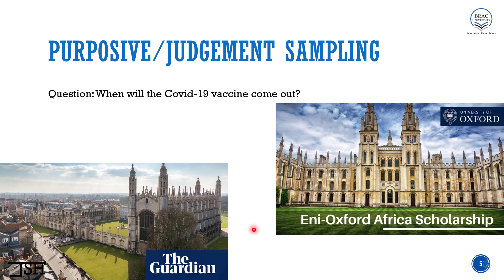That is why it will be called judgment sampling. Now, why is this same sampling method also called purposive sampling? Because I'm going to select someone who is going to fulfill my purpose of the research. That is why it's also called purposive sampling.